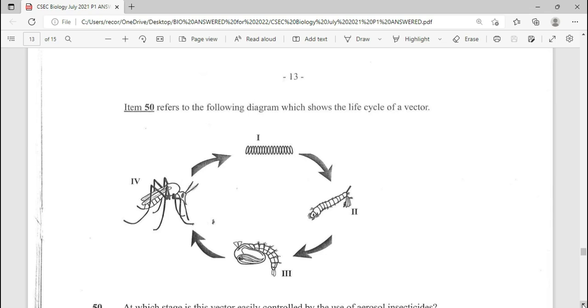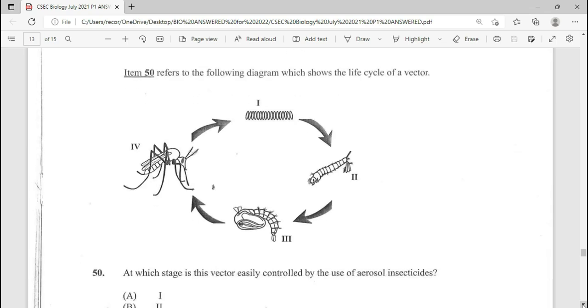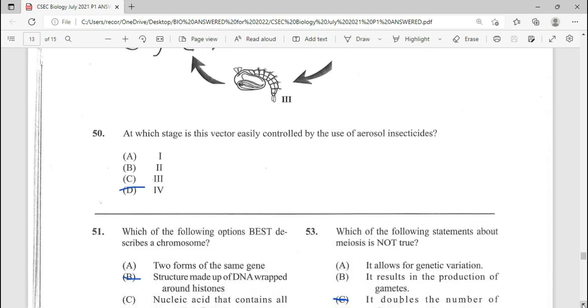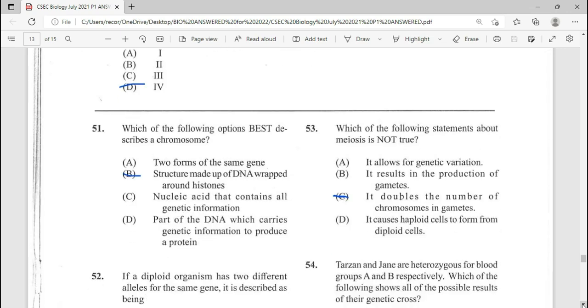And we are moving on to item 50 which refers to the following diagram which shows the life cycle of a vector. So we have 1, 2, 3, 4: egg, larva, pupa, adult. At which stage is the vector easily controlled by the use of aerosol insecticide? It's going to be stage 4 or the adult stage. 50, answer there being D.